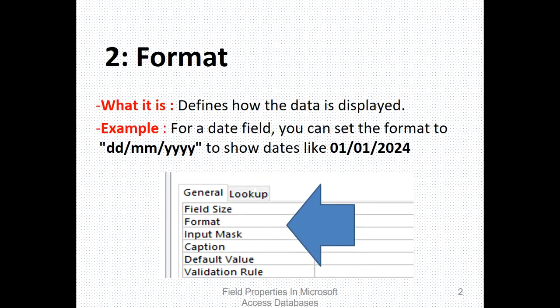The second field property is called format. Format defines how the data is displayed. For example, in a date field you can set the format to DD, meaning day with two characters, MM for month allowing two characters, and YYYY showing it will display four characters.